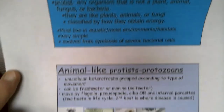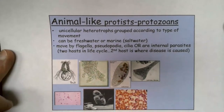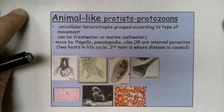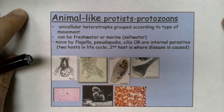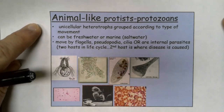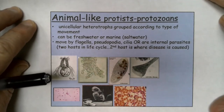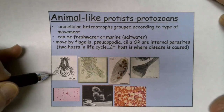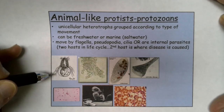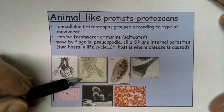Let's start with the animal-like protists, which are often called the protozoans. 'Zo' means animal, like going to the zoo. All animal-like protists are unicellular, all heterotrophic, and they're grouped according to their type of movement. They either move using flagella — long whip-like structures — or they move by pseudopods, those false feet we talked about with phagocytosis, like an amoeba surrounding and engulfing food.